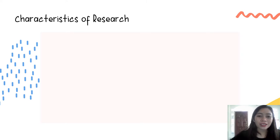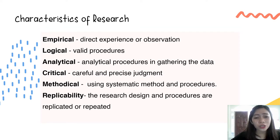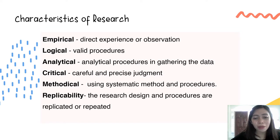Now we proceed to the characteristics of research. First, it must be empirical, meaning it is based on direct experience or observation of the researcher. Next would be logical — research must be done using valid procedures. Next would be analytical, meaning there should be analytical procedures in gathering data. Next would be critical — the researcher must be very careful and have precise judgment. Next would be methodical — the researcher must use systematic methods and procedures. And also, research must have replicability, meaning the research design and procedures can be replicated or repeated by other researchers.